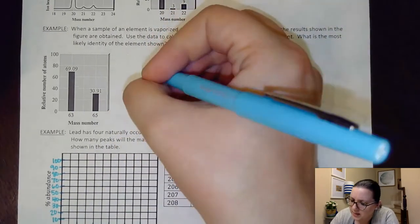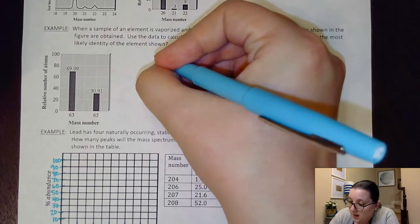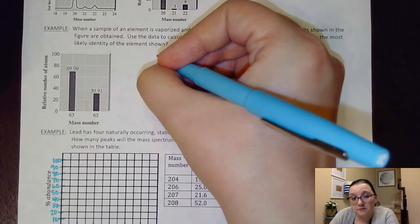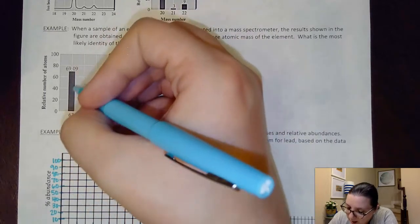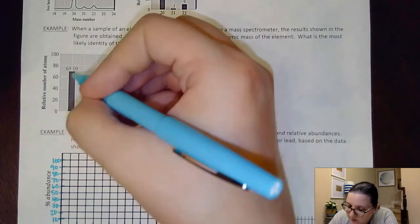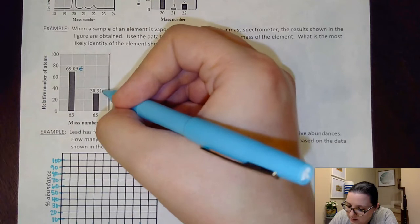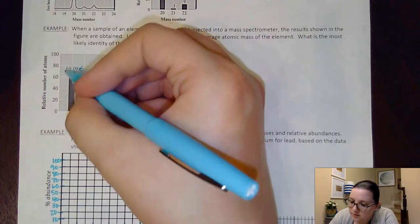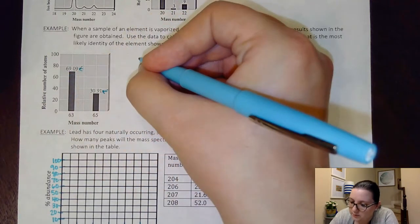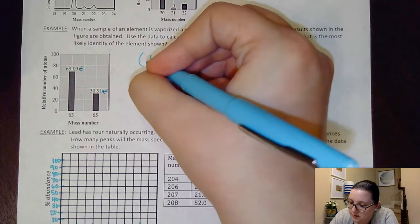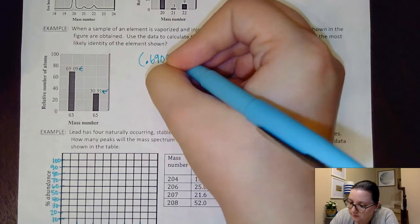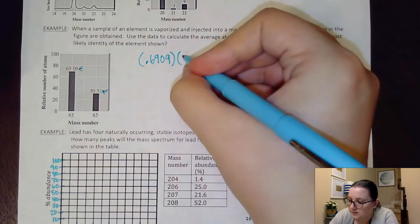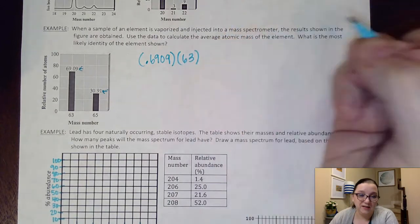So just like we've done before with calculating average atomic mass, I would take my percent and convert it into a fraction. So like, for example, here, you see they're giving us our mass numbers, but then these guys here are giving us our exact percentages. So for this first isotope, 69.09%, I'd give as 0.6909, my mass number of 63.